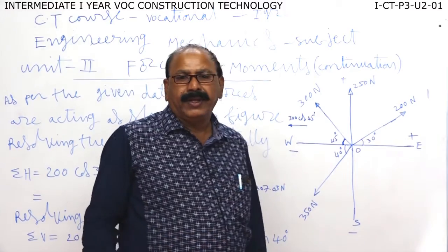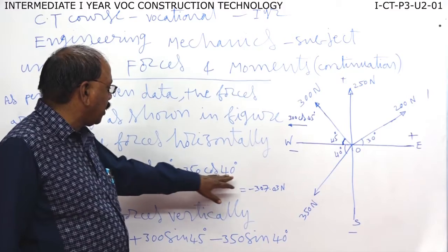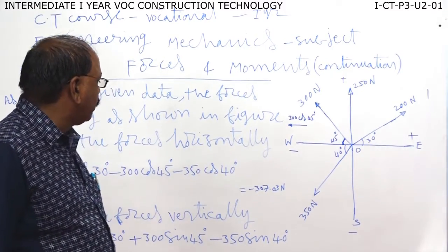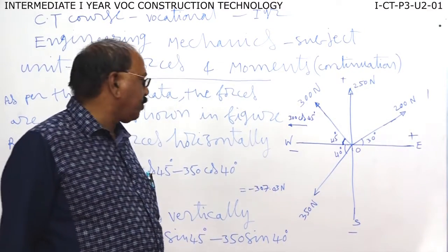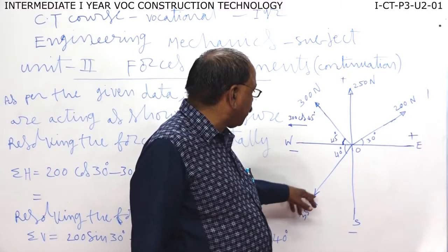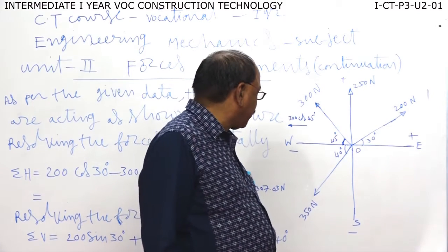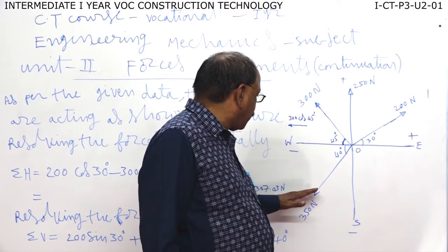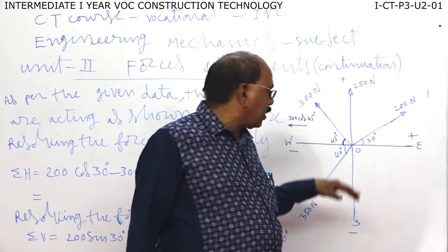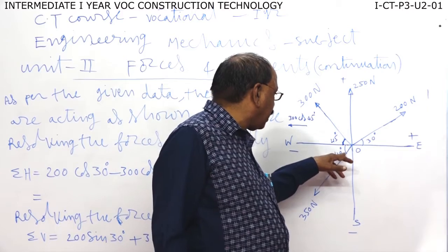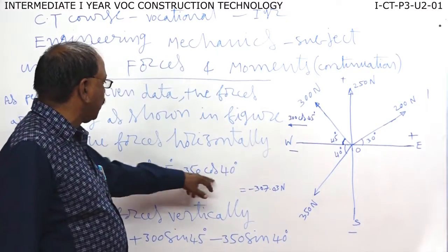For the 350 Newton force acting at point O at an angle of 40 degrees from the horizontal line, the horizontal component is minus 350 cos 40 degrees, because the force is directed toward the left side of the x-axis.